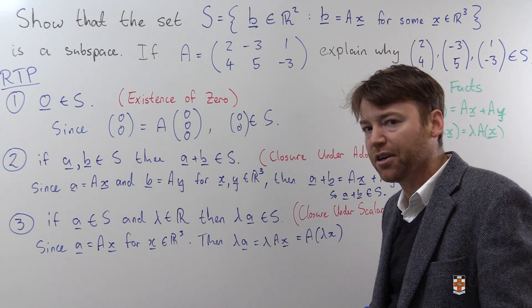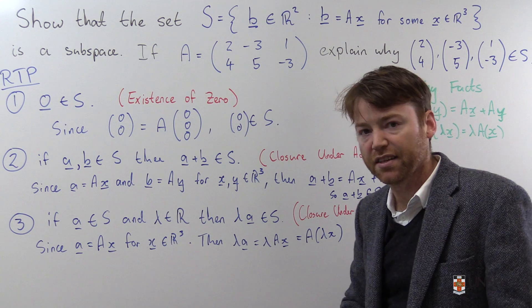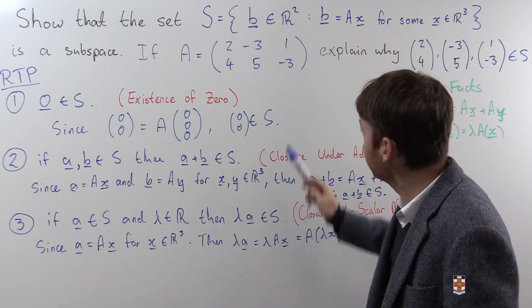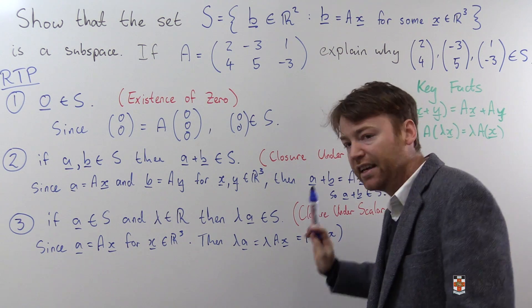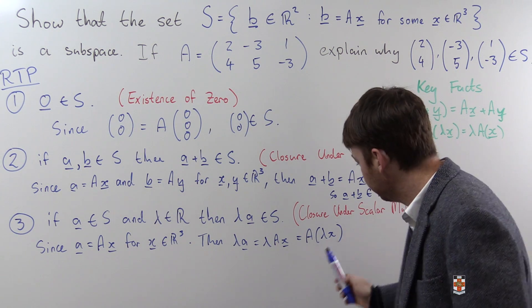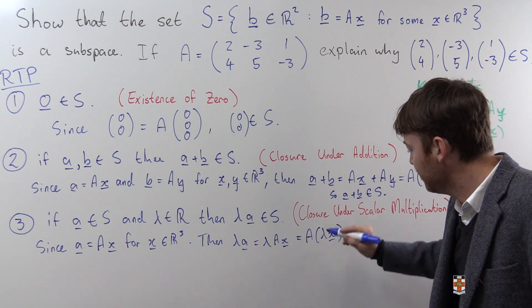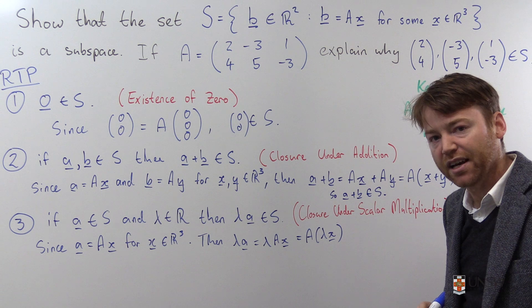And this is exactly what I wanted to show in order to prove that this element was in S. I know this is a vector in R2 and furthermore, it has this shape of being in the image of A. And in fact, I've shown you exactly what element from R3 maps to lambda A, lambda X maps to lambda A.